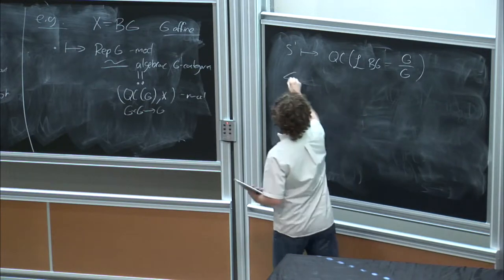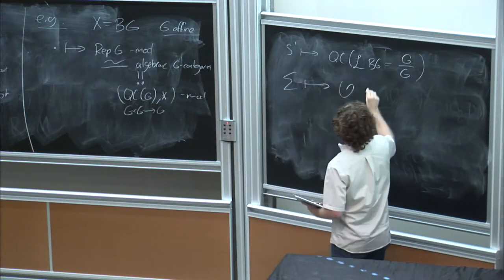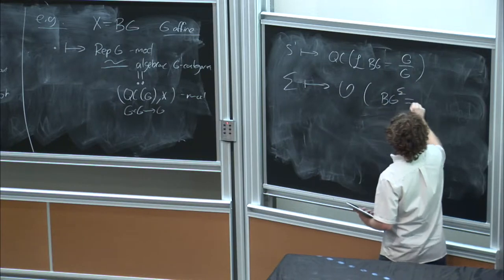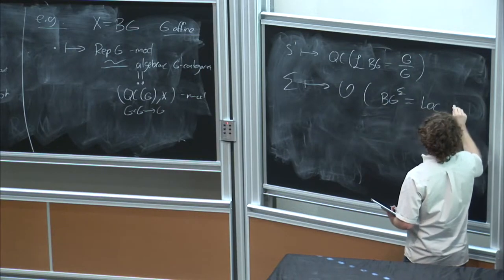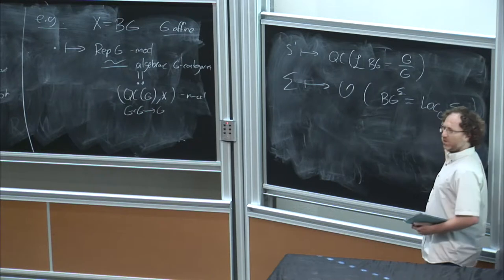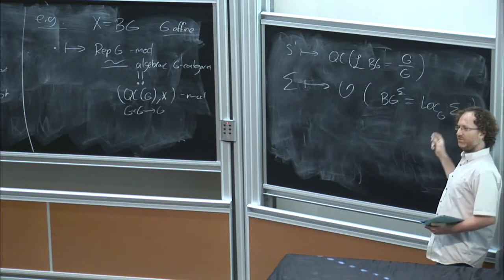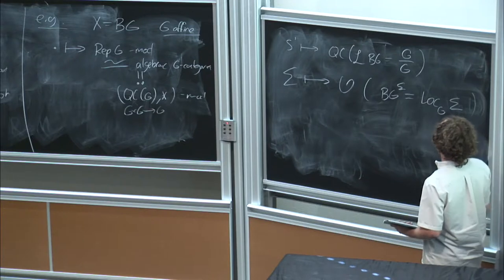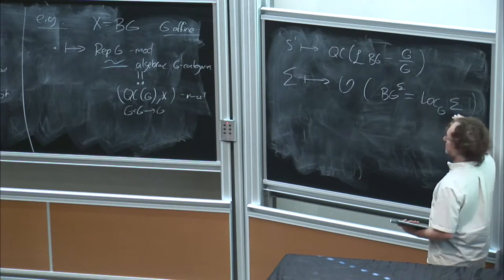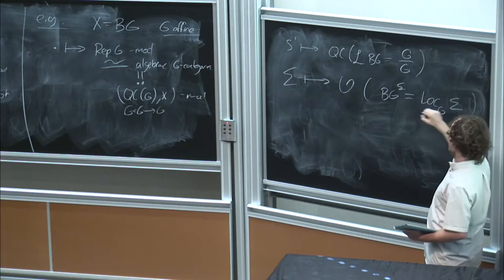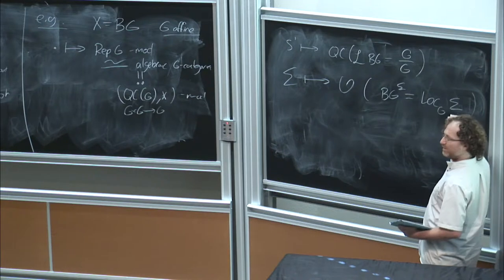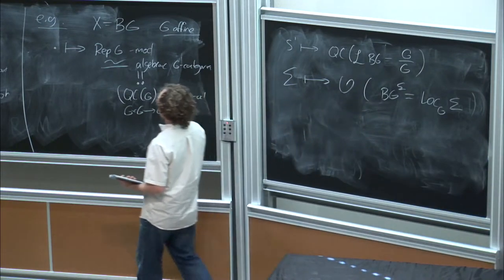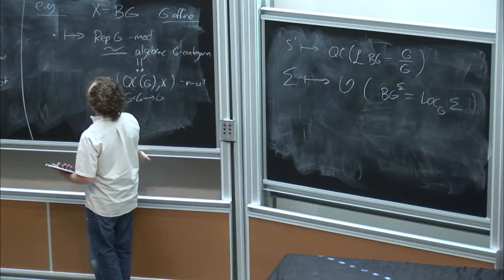To the circle, we're attaching quasi-coherent sheaves on the loop space of BG, which is the adjoint quotient G mod G. So it's kind of character or class sheaves instead of class functions — adjoint equivariant sheaves on G. And to a surface, we're attaching functions on BG to the sigma, which is local systems G on sigma. I'm using always the Betti sense of local systems. So this is the Betti space of local systems on the topological surface sigma — functions on this derived scheme of local systems. So that's an example of this theory, of what I'm calling Rosansky-Witten theory.